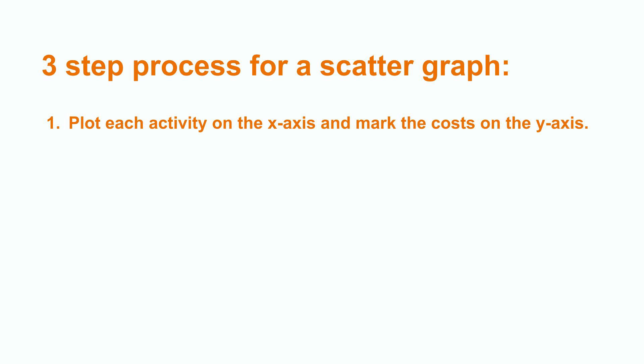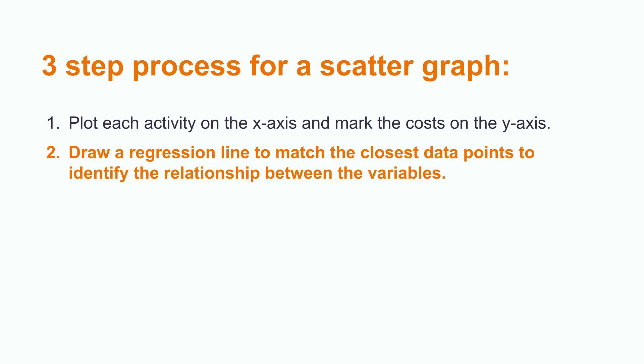The process to analyze fixed cost in a scatter graph is done by using a three-step process. Number one: each activity level is plotted on the x-axis and the costs are marked on the y-axis. A line is carefully drawn to match the closest data points to find out the relationship between the two variables. The presence of fixed cost for mixed cost usually starts from the upper point on the y-axis, which would indicate the presence of fixed cost. The upward slope of the line shows a gradual increase in the costs with the increasing activity level.